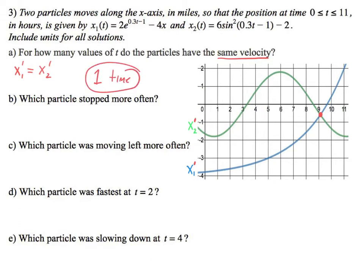If you need technology to find exactly what that value is, it's around 9 point something. Next: which particle stopped more often? Stopping occurs when velocity equals 0.